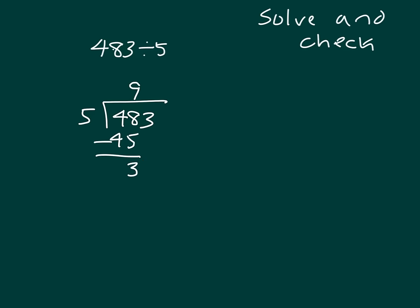At that point, we bring down the 3, so we'll have 33 ones divided by 5. 33 divided by 5 is 6, because 6 times 5 is 30, and 33 minus 30 is 3. There's nothing else to bring down. Therefore, 3 is our remainder.